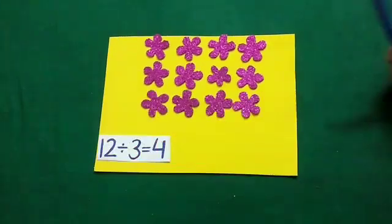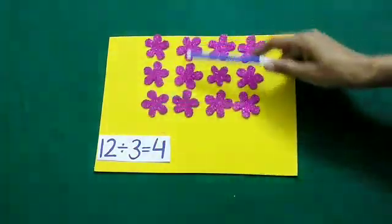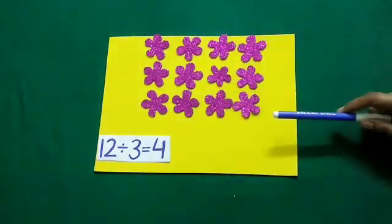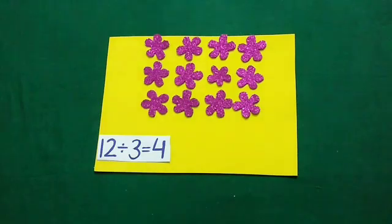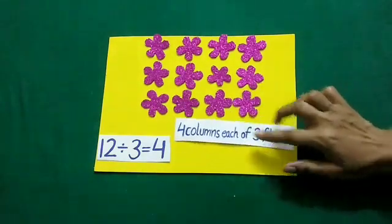Now, I have from up to downward side 4 columns and in each column we have 1, 2, 3 flowers. It means 4 columns each of 3 flowers.